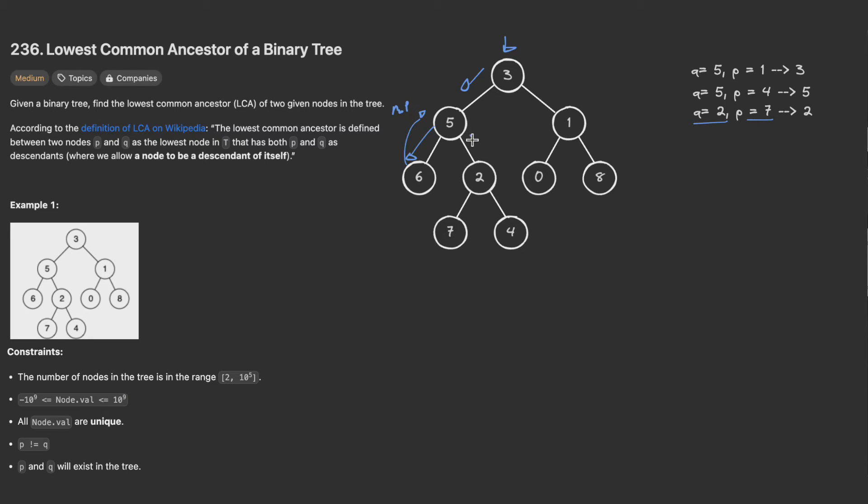Then we go to the right hand side. Here we have 2. Does 2 equal 2 or 7? Yes, true. So we mark it with true and this one is false, this one is false. We return node 2 to the parent. Then we go up here. Now let's go to the right hand side. Here we will be returning 2. Let's keep this in mind.